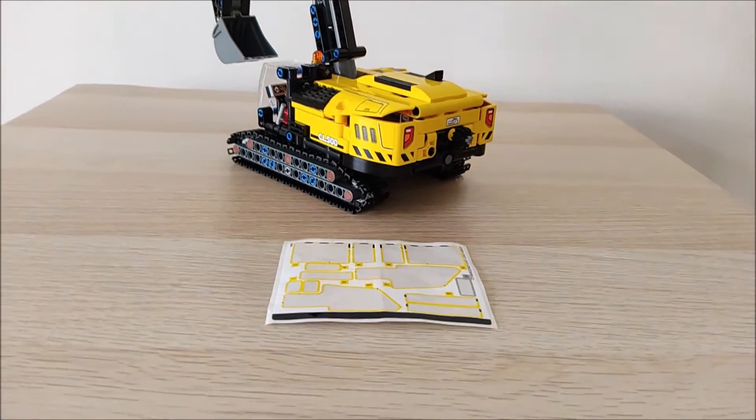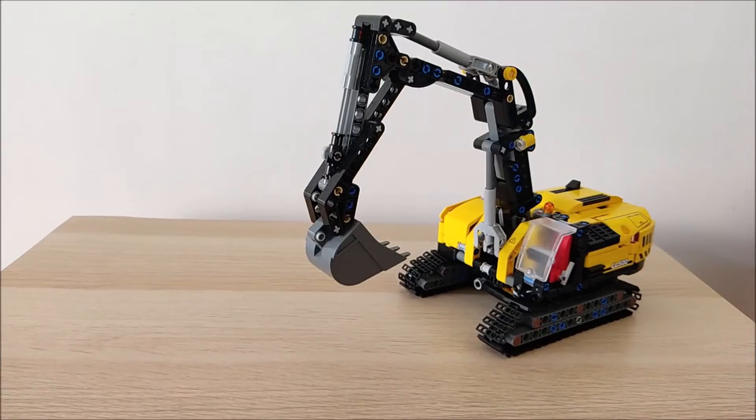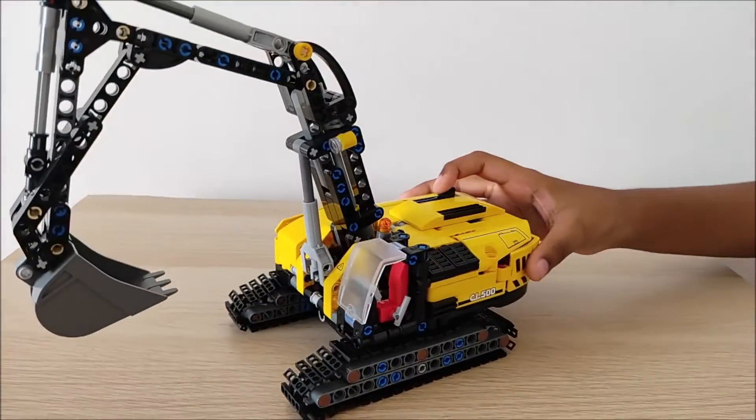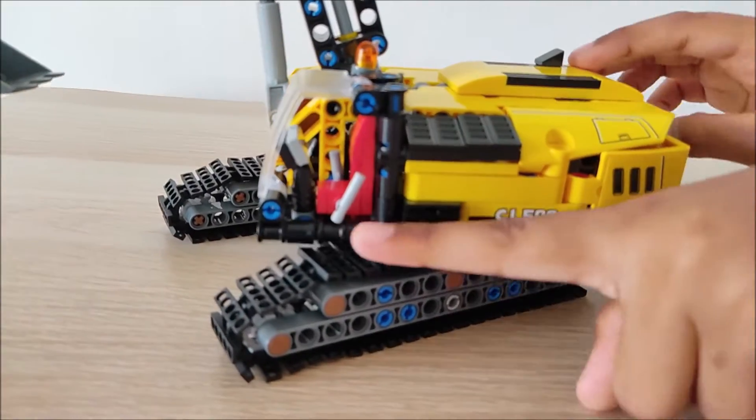As you can see, I've put all these stickers. So the excavator is on caterpillar tracks and here's the cabin.